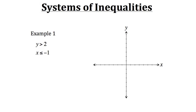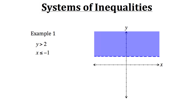Let's start off by graphing both of the inequalities. First, we have y is greater than 2. When we graph the first inequality, we'll graph it like y equals 2, except we're going to have a dotted line — because with y is greater than 2, y equals 2 is not part of the solution since it doesn't have the equal sign. Now we need to draw the region expressed by the inequality. If y is greater than 2, the solution is going to be anywhere above this y equals 2 line. So let's draw that region.